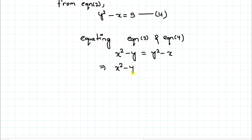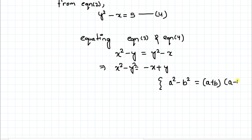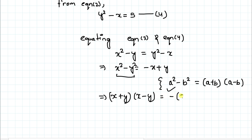So we have x squared minus y squared on the left, and y minus x — or equivalently, taking minus one common, minus of (x minus y) — on the right. Now we apply the algebraic identity a squared minus b squared equals (a plus b)(a minus b), giving us (x plus y)(x minus y) equals minus 1 times (x minus y).